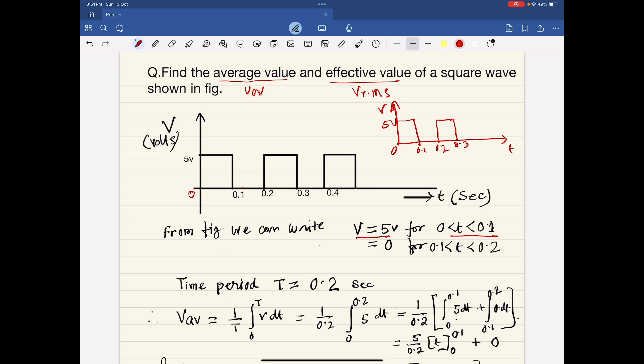And V is equal to 0 for this period. V is equal to 0 for the period T is greater than 0.1 and less than 0.2. Up to this, this one is the time period.